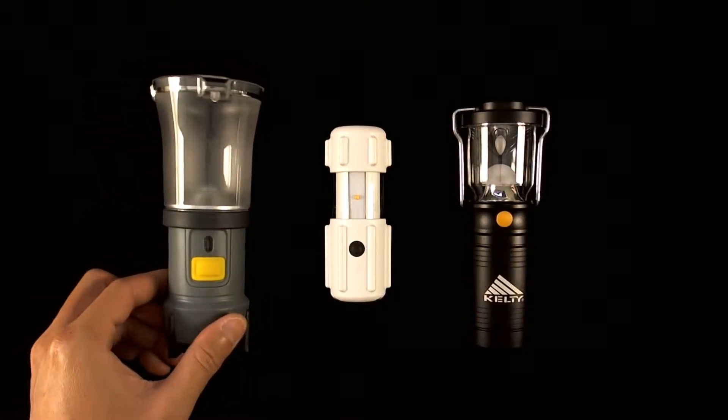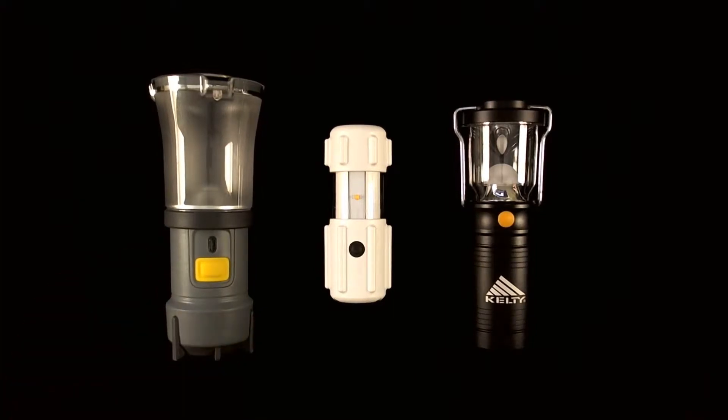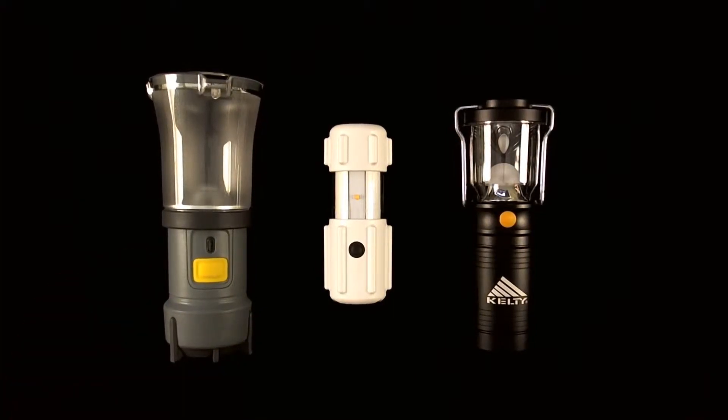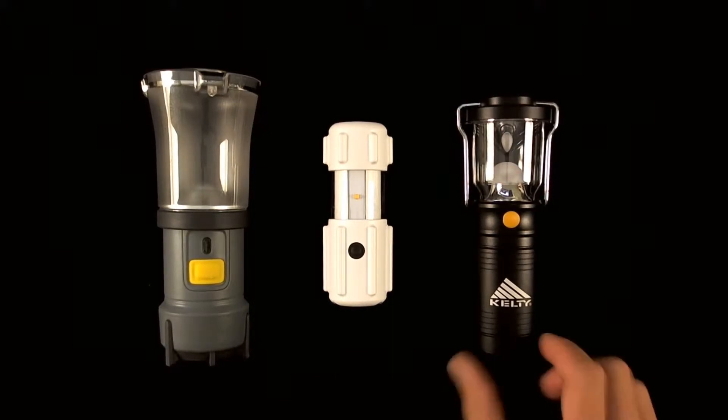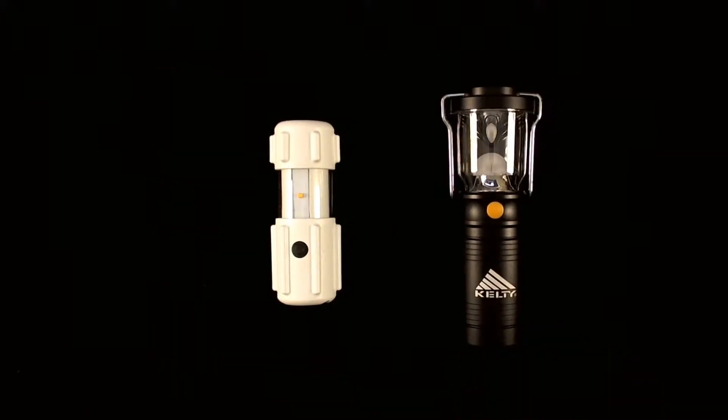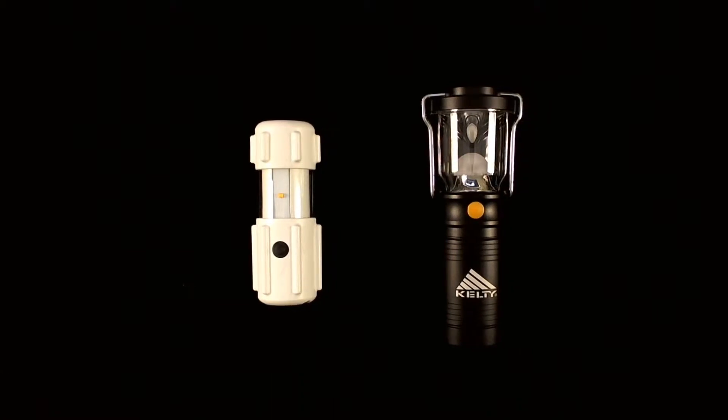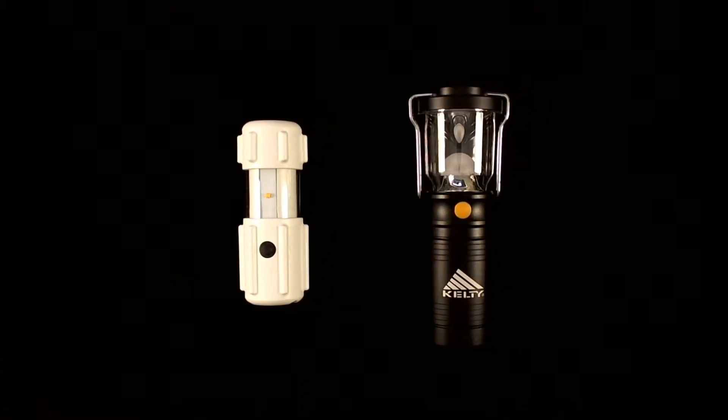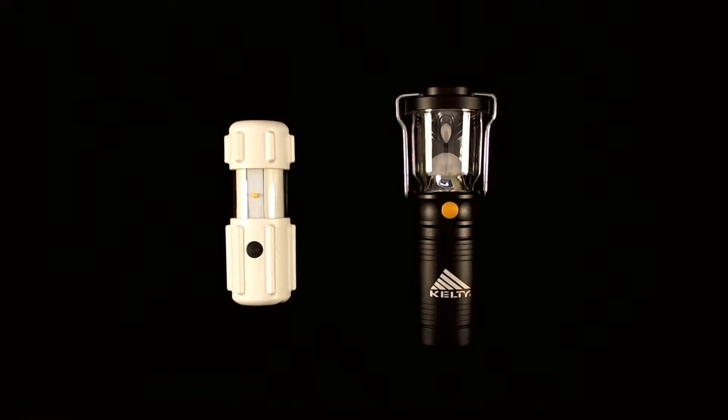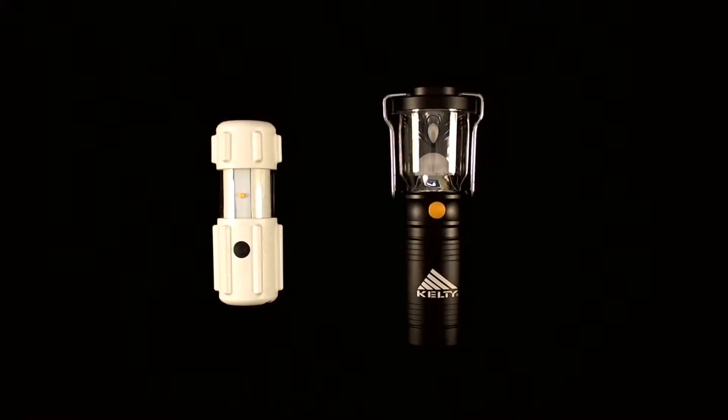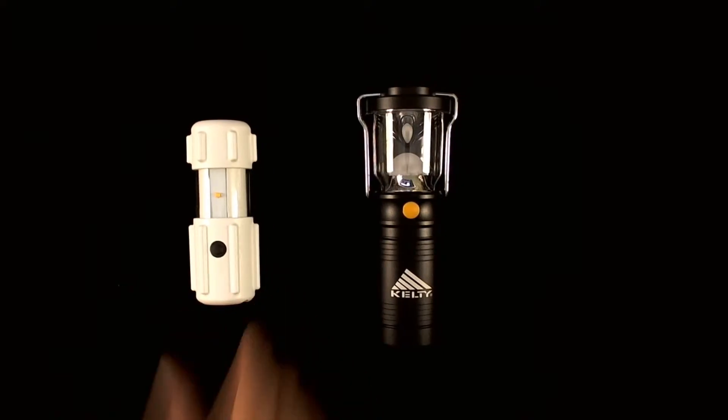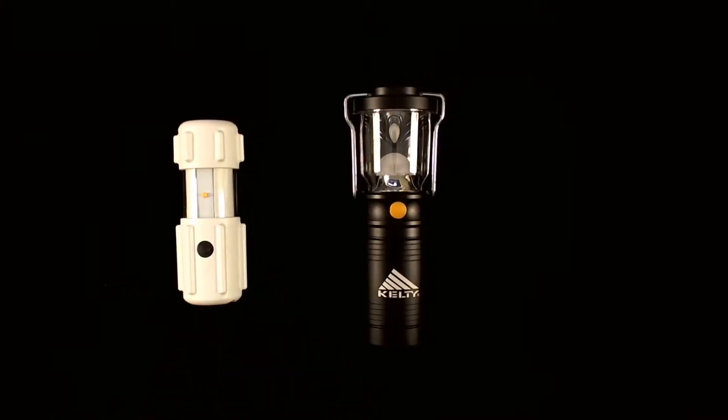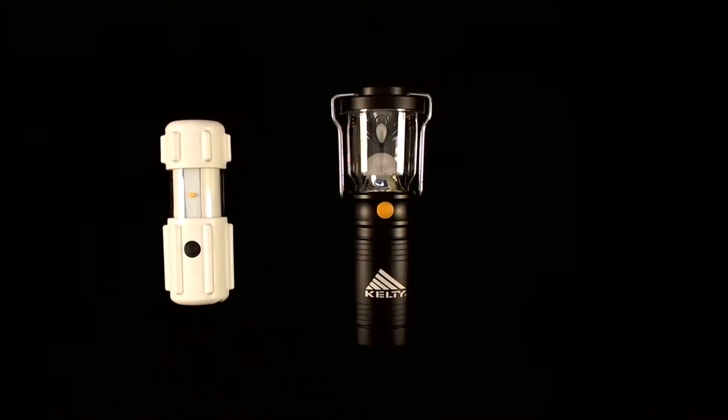As you can see the Kelty is a bit closer to the RPAL in terms of height and diameter yet is still quite a bit larger. The Lumatech Lantern comes in at a maximum height of a little over 5.5 inches with a maximum outer diameter of 1.95 inches. The RPAL has a maximum outer diameter of 1.6 inches and is approximately 4.1 inches tall.